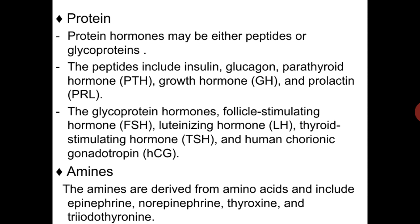We also have protein hormones. Protein hormones may be either peptide or glycoprotein. The peptide hormones include insulin, glucagon, parathyroid hormone (PTH), growth hormone (GH), and prolactin (PRL).